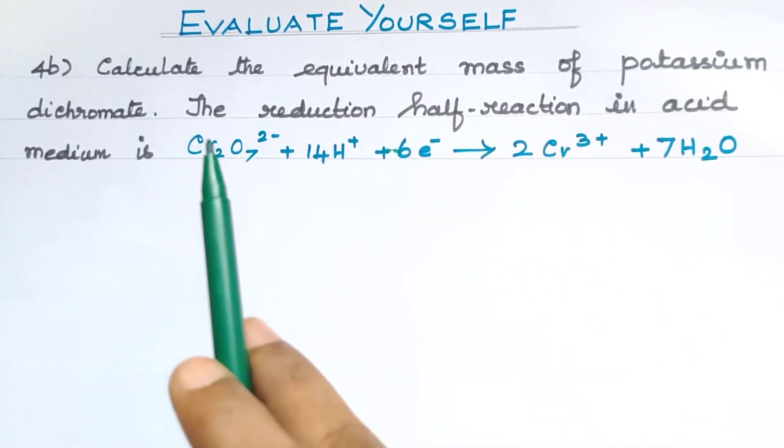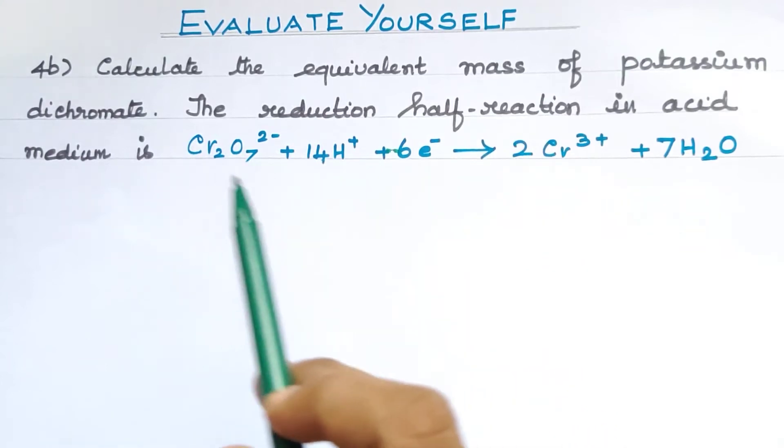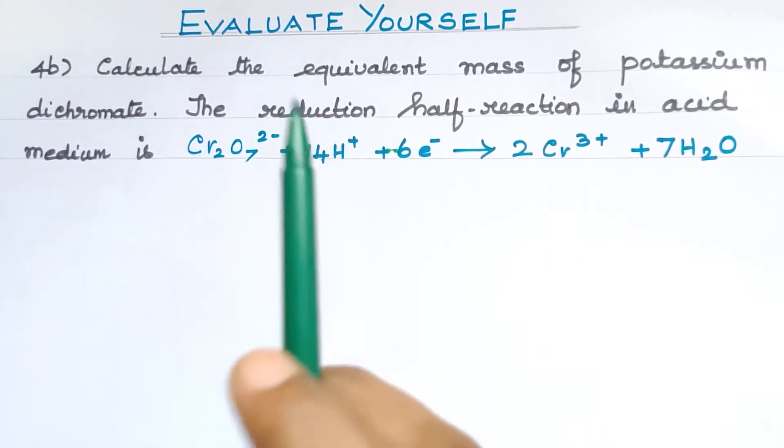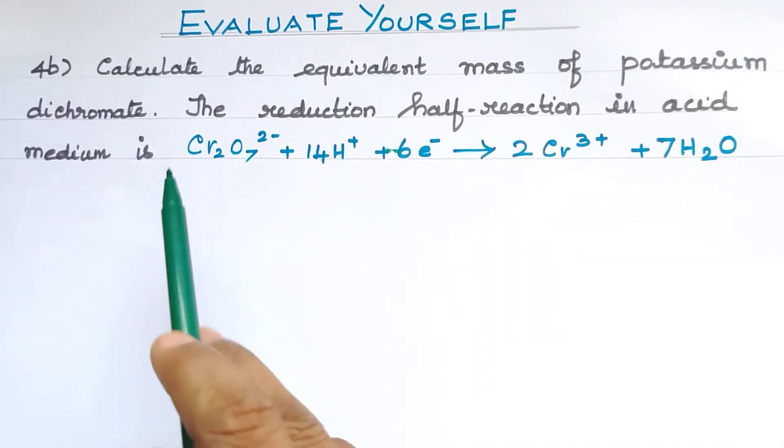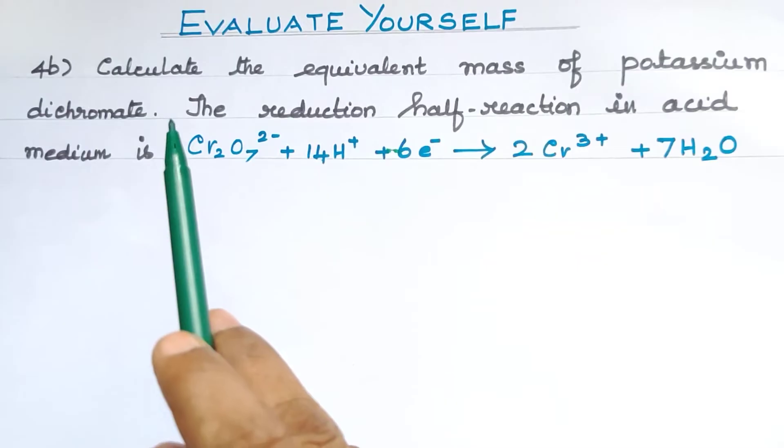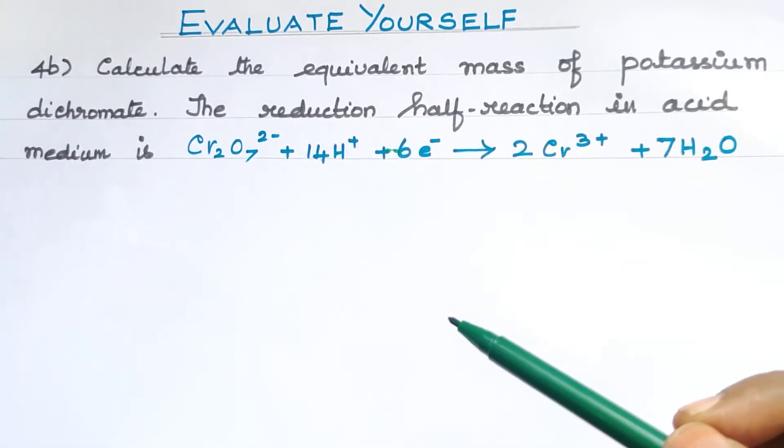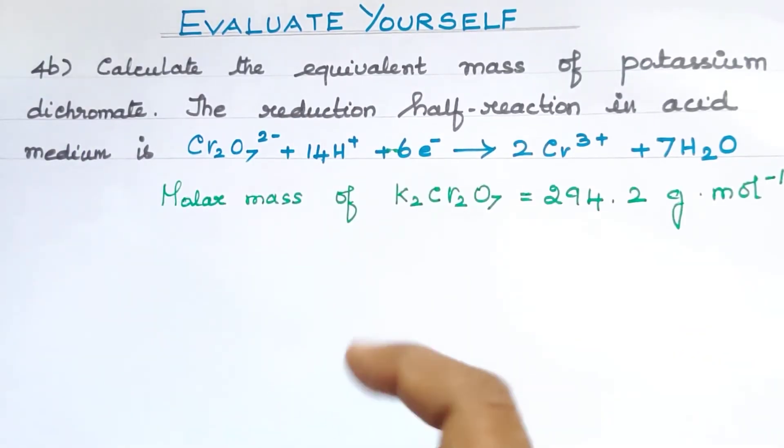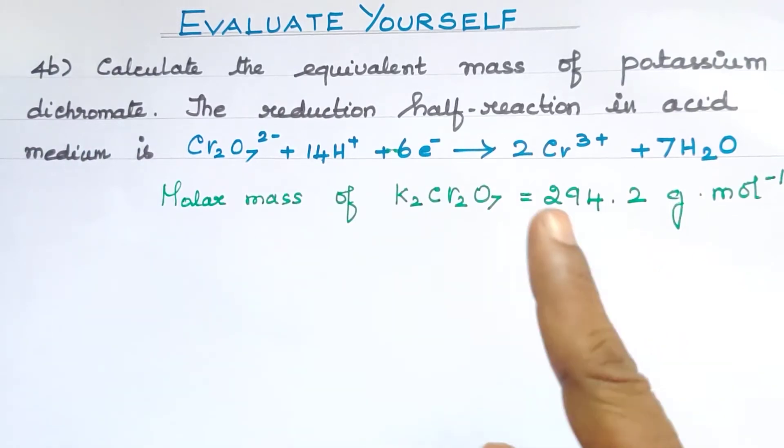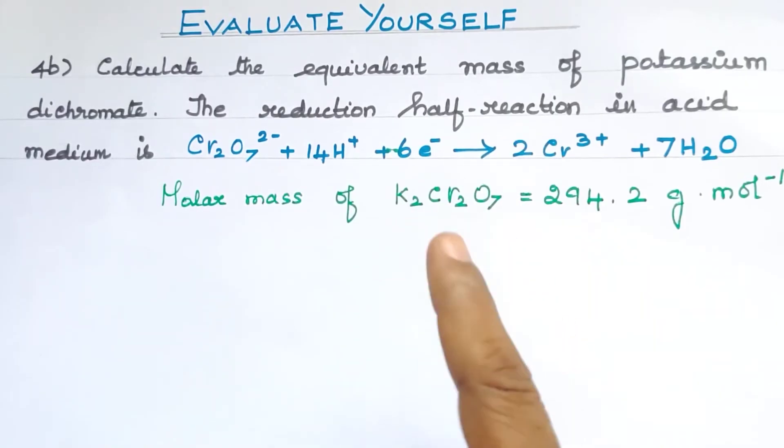The equivalent mass of oxidizing agent equals the compound's molar mass divided by the number of electrons. In this equation, one mole accepts how many electrons? That is the equivalence factor.